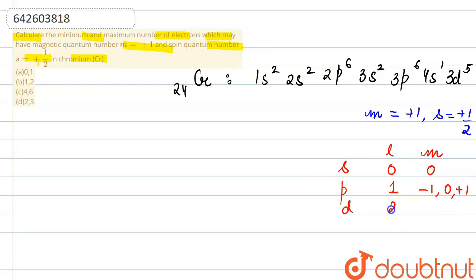The next thing is the d subshell which has azimuthal quantum number l as 2, and m value will vary from minus 2 to plus 2. So it will have values minus 2, minus 1, 0, plus 1, and plus 2.